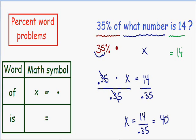And if you're not allowed to use a calculator, I do have a video on how to divide decimals. So now we have a final answer of x equals 40. So 35% of what number is 14? 35% of 40 is 14.